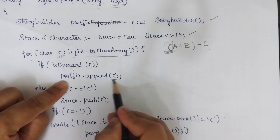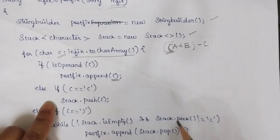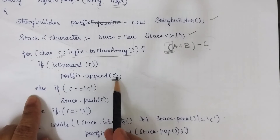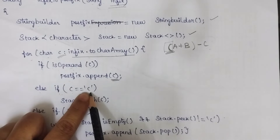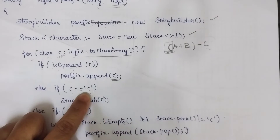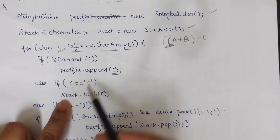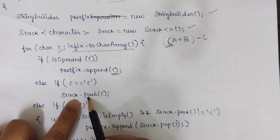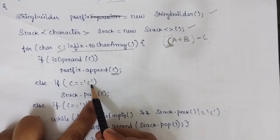The next condition checks if the scanned character is an open parenthesis. When the scanned character is an open parenthesis, we directly push it into the stack without checking any other condition. So stack.push is called with the scanned character c.